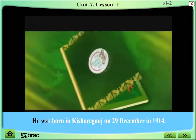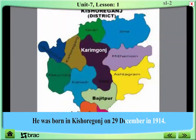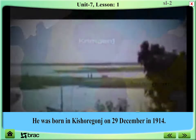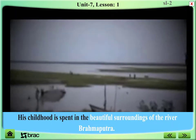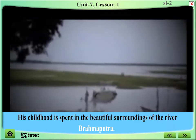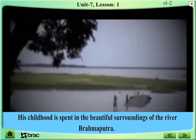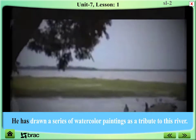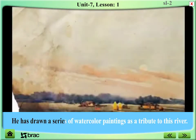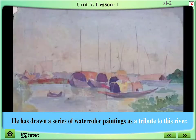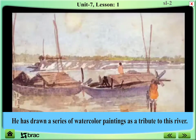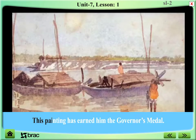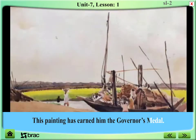He was born in Kishorgonj on 29 December 1914. His childhood was spent in the beautiful surroundings of the river Brahmaputra. He drew a series of watercolour paintings as a tribute to this river. These paintings earned him the Governor's Medal.